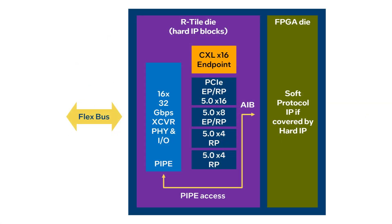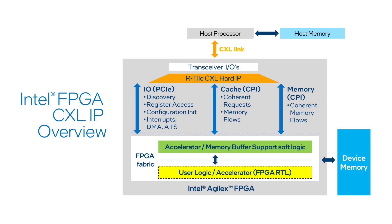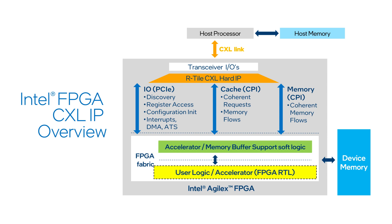Let us take a deeper look into how the Intel Agilex FPGA implements the CXL solution. The Intel FPGA CXL intellectual property solution comes as a combination of hard IP and soft IP support logic. To design with the Intel FPGA CXL IP, you need to purchase a separate IP license. After the CXL IP license has been activated, you will be able to find the CXL IP in the Intel Quartus Prime software IP library. Using the GUI, select the variant of the CXL IP license — either Type 1, Type 2, or Type 3. After that selection is made, the R tile CXL hard IP block is activated and the appropriate support soft logic IP will be added. The FPGA designer can then interface to the support logic by adding any other user logic or acceleration functions into the design.